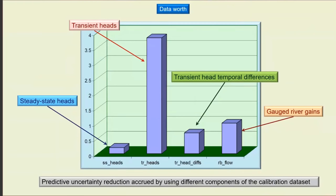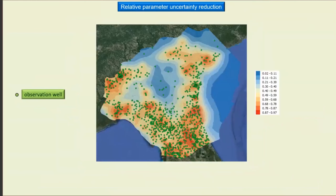It becomes easy to see the most cost-effective way to spend the field data acquisition budget. The outcomes of linear analysis can also be mapped spatially — showing the extent to which uncertainties of hydraulic conductivity parameters have been reduced through history matching. Blue areas show where there's been little to no reduction in uncertainty from the prior; red areas show where there's been a large reduction. Not surprisingly, the biggest reductions are occurring where we have plenty of observations. A map such as this shows that even with a perfectly calibrated model, predictions made in the blue area may be just as uncertain as if made with an uncalibrated model.